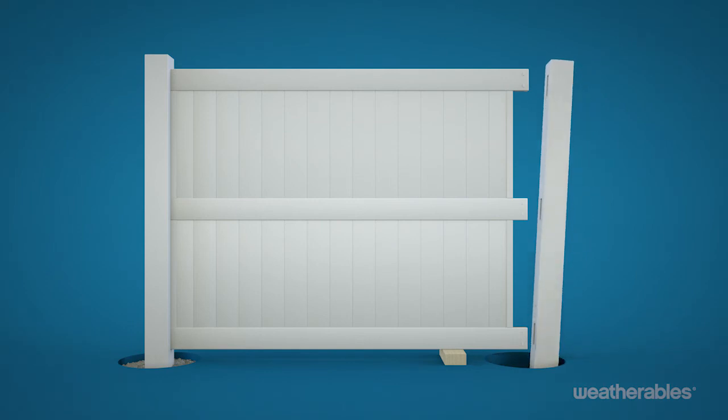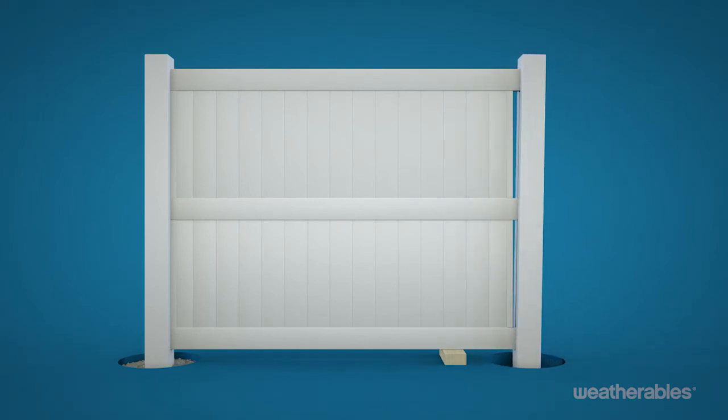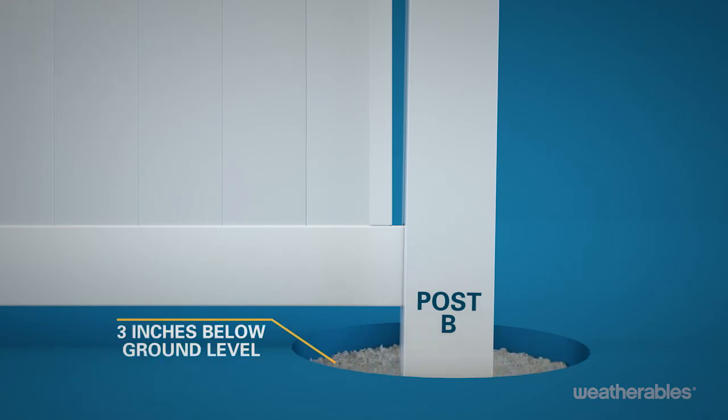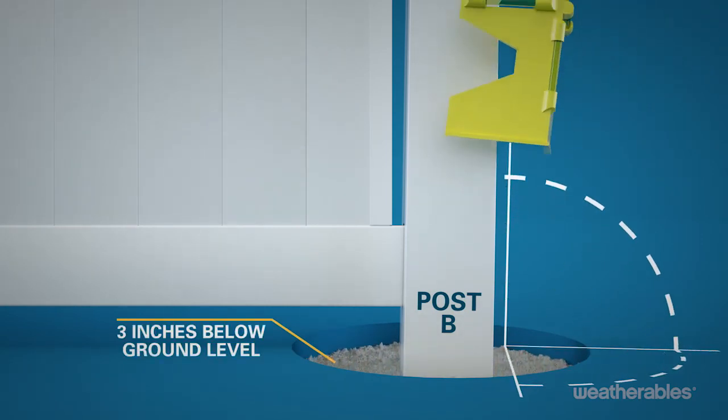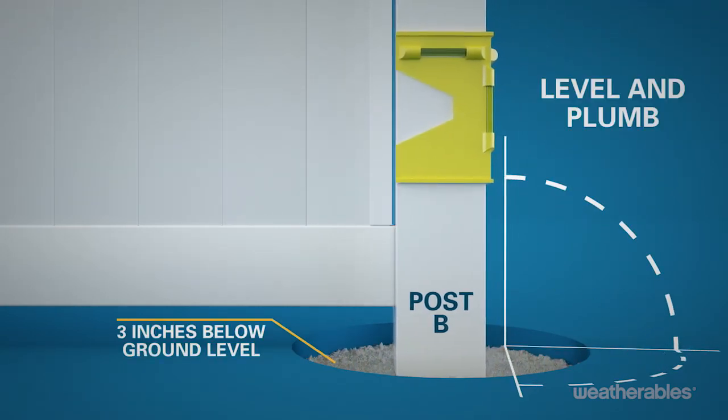Next, slide the bottom rail followed by the mid and top rails into post B. Pour concrete around post B to about 3 inches below ground level, level, and plumb.